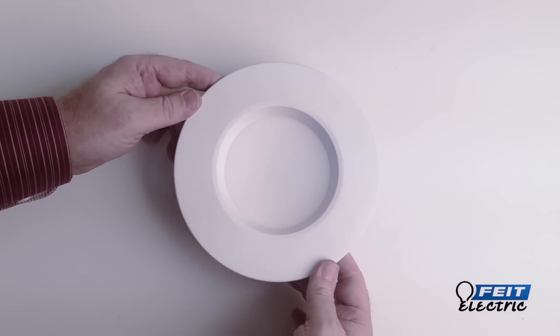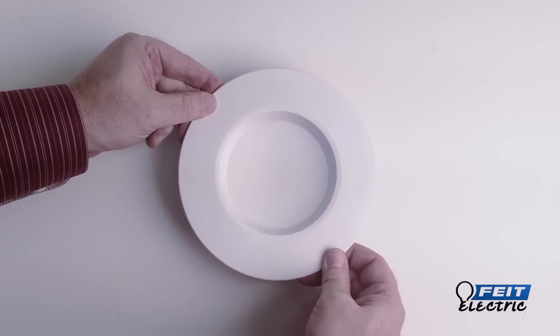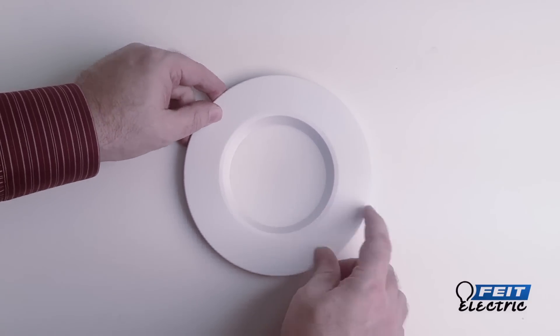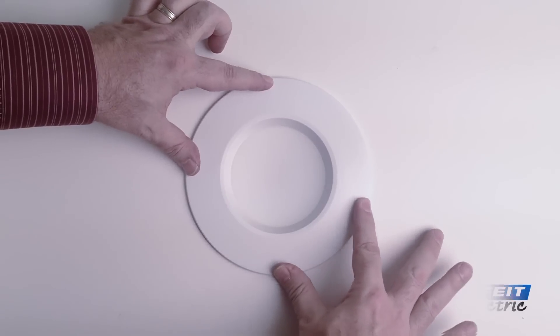Straighten the recessed trim, push it upward, and it will snap into place.